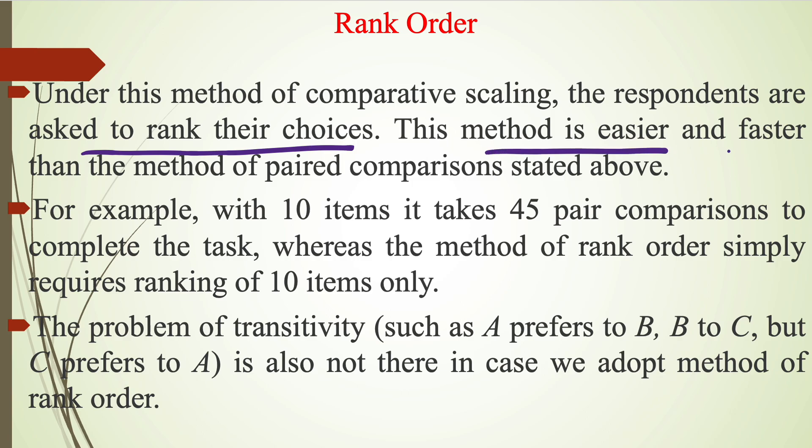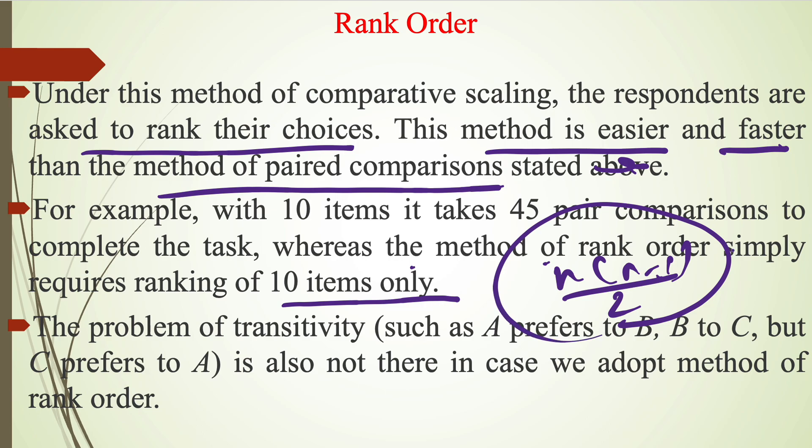This method is easier and faster than the method of paired comparison stated in the previous video. For example, with 10 items, it takes 45 pair comparisons to complete the task whereas the method of Rank Order simply requires ranking of 10 items only. As we take the formula for paired comparison n into n-1 for total number of comparisons. But in the case of Rank Order, we have to take only 10 items only.